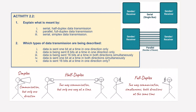And finally, serial simplex data transmission: serial and simplex means one wire, one bus, and one direction for the communication. So the sender can only send information to the receiver using this single wire — great, as we said before, for long distances. And that is question one complete.